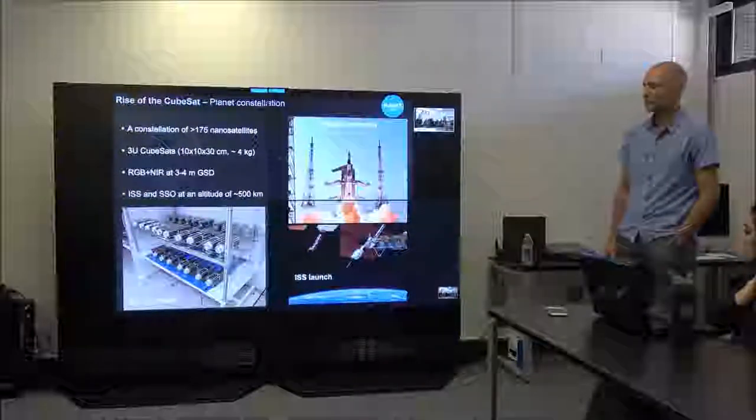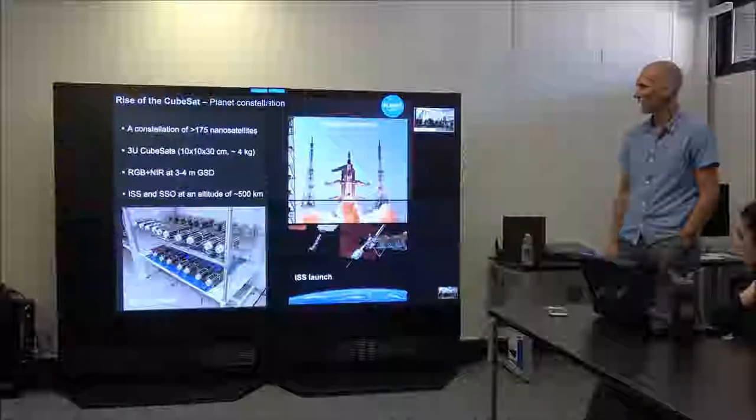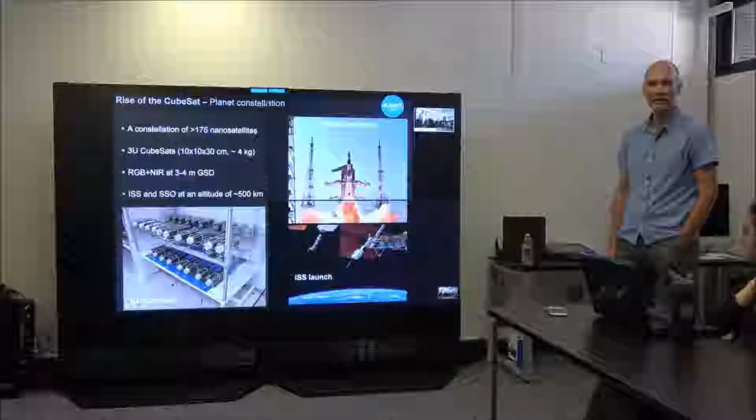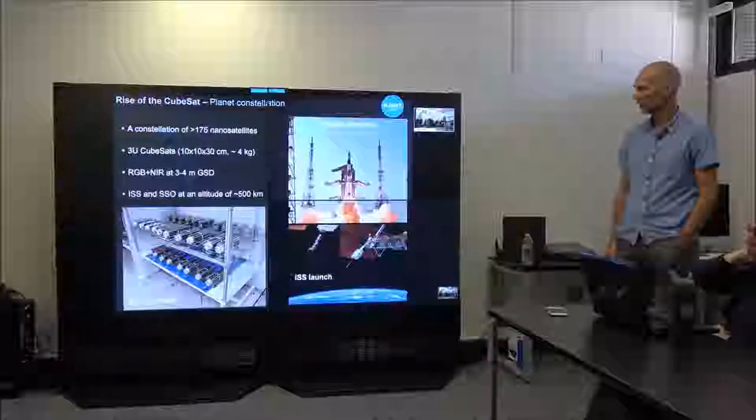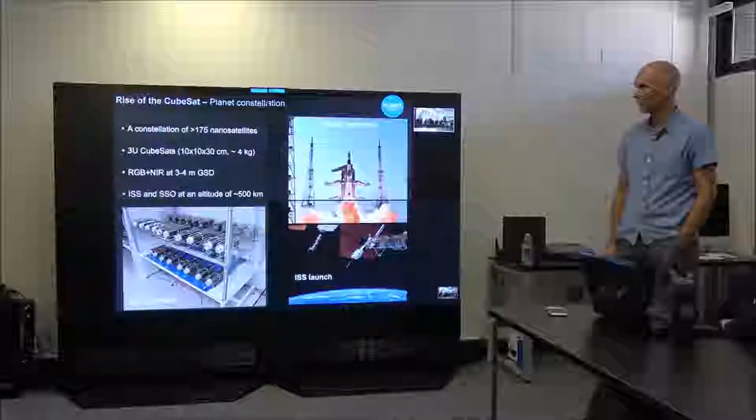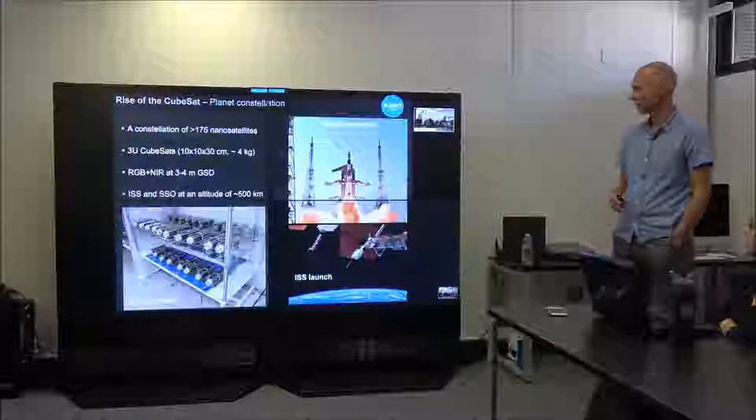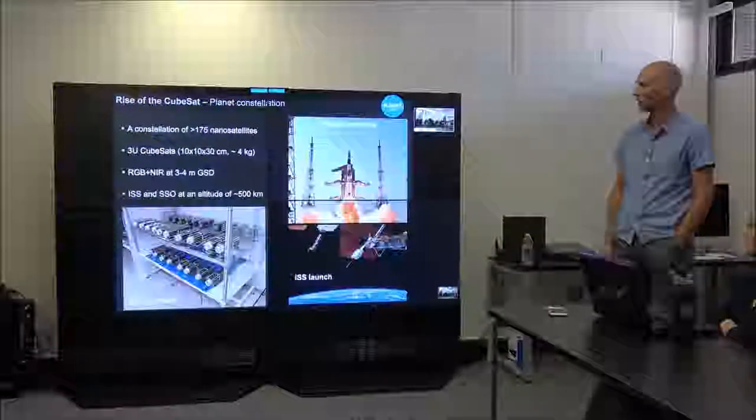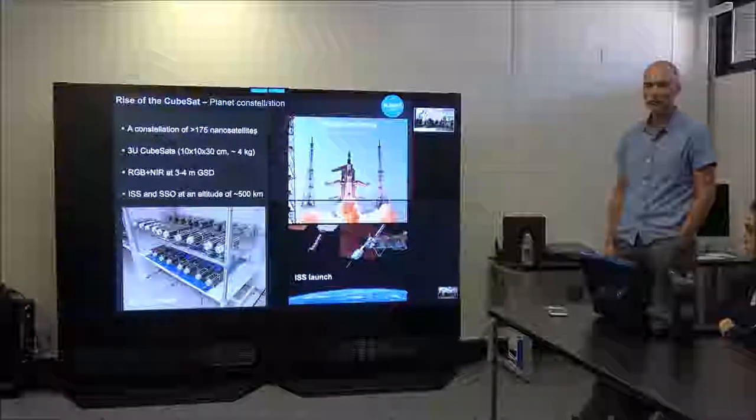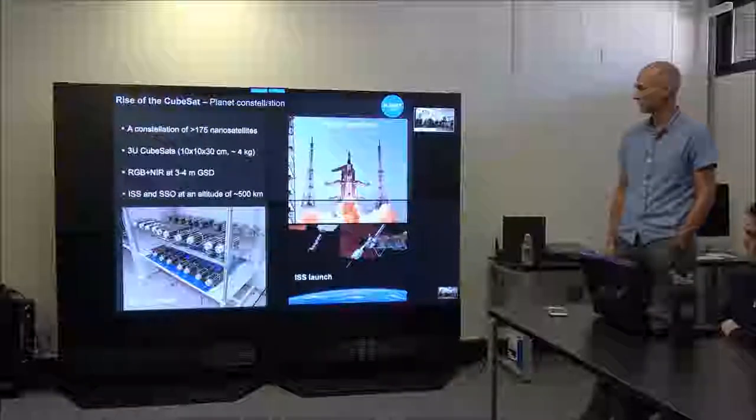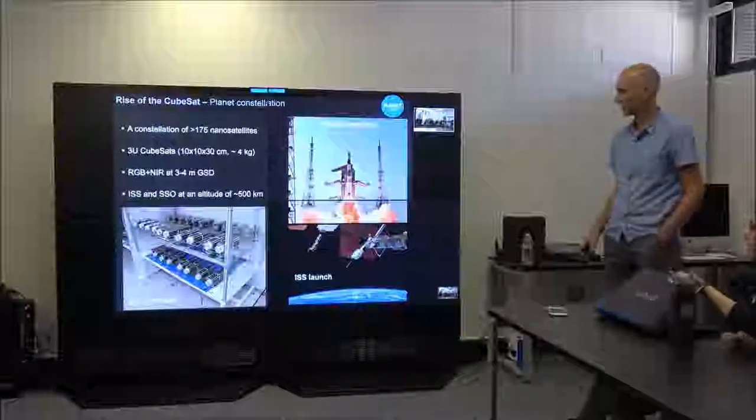So, Planet Labs is currently the biggest operator of these small satellites in space. They have currently around 175 active nanosatellites that adopt the 3U standard. It has the mass of 4 kilograms. And this massive constellation is orbiting, or is kind of imaging the entire globe in four bands, the RGB and the infrared, at a three to four meter ground sampling distance. Most of these are in a sun-synchronous orbit with a fairly consistent overpast time.